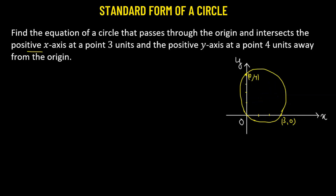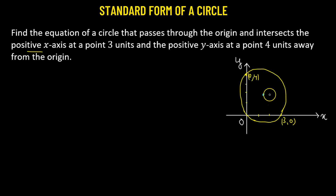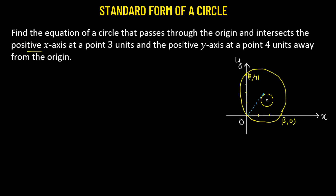How do we do that? To find out the equation of the circle, there are two things that we need: the coordinate of the center and the radius of this particular circle. So let's try to first find out the coordinate of the center.